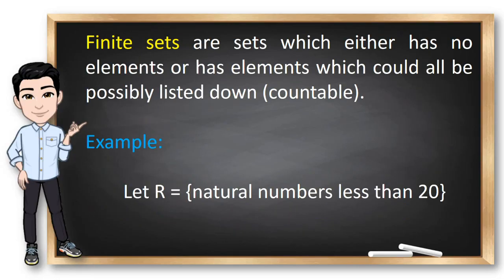And speaking of cardinality, we can only count the elements of finite sets. Because finite sets are sets which either has no elements or has elements which could all be possibly listed down. They are countable. Let r be the set of natural numbers less than 10. Can we count them all? Of course. We could start with 1, 2, 3, 4, 5, 6, up to 19. Okay? So, that's an example of a finite set.